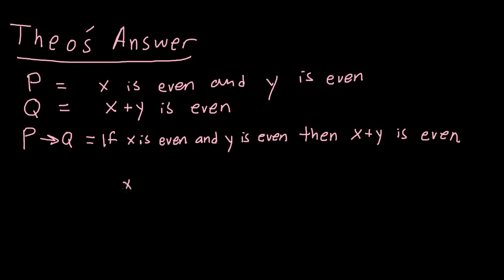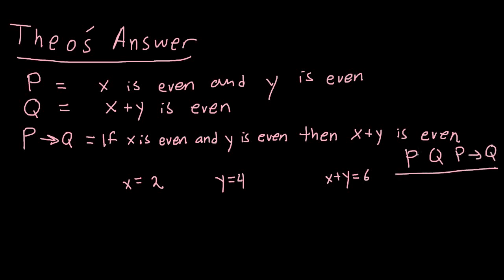Starting with X=2 and Y=4, X plus Y equals 6. Is X even? Yes. Is Y even? Yes. So P is true. X plus Y is 6, and 6 is even, so Q is true. P is true and Q is true, so P implies Q is also true. Our statement seems to be working.